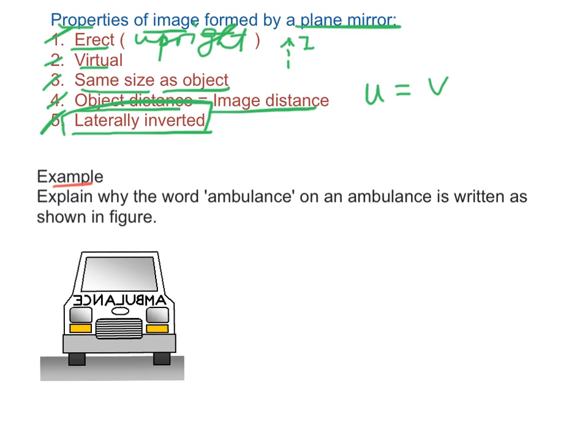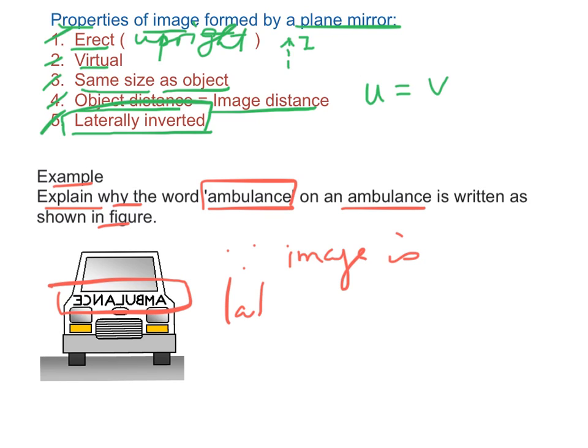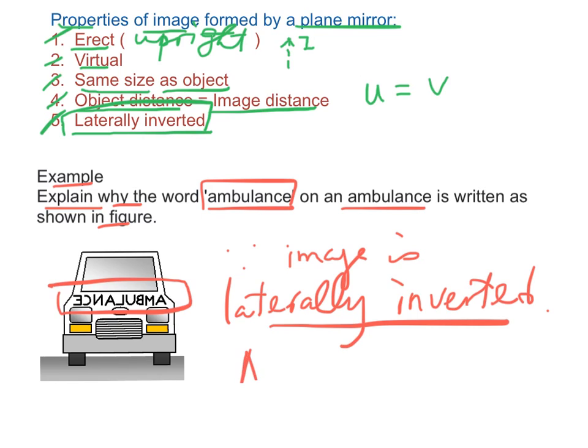Example, can you explain why the word ambulance on an ambulance is written as shown in the figure? Since the image formed by a plane mirror is laterally inverted, therefore, the image seen by the driver through the rear view mirror would be the word ambulance.